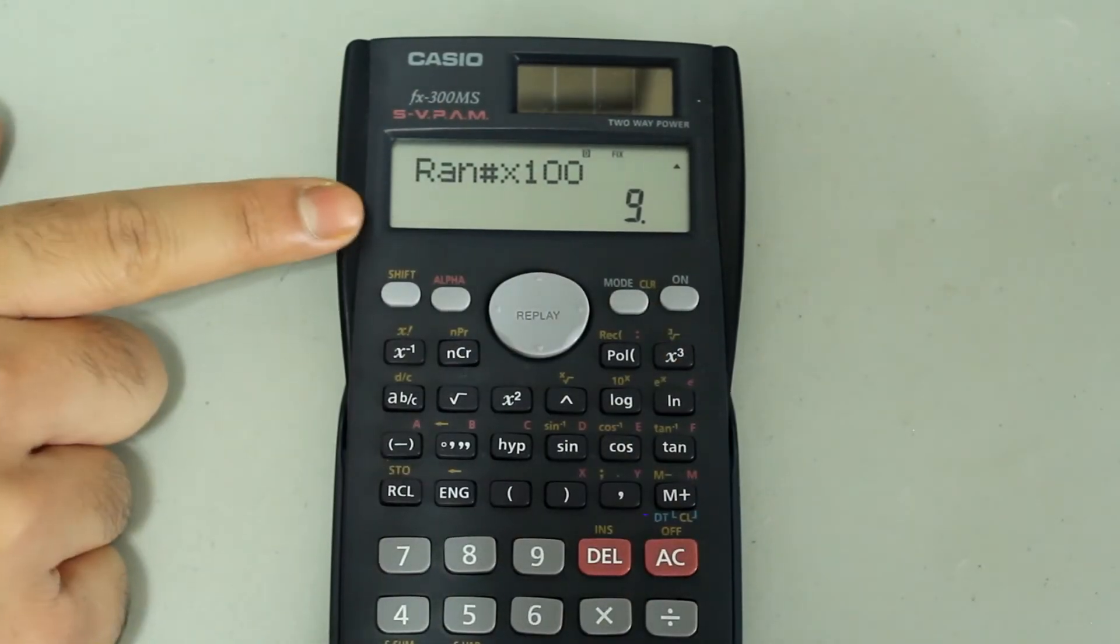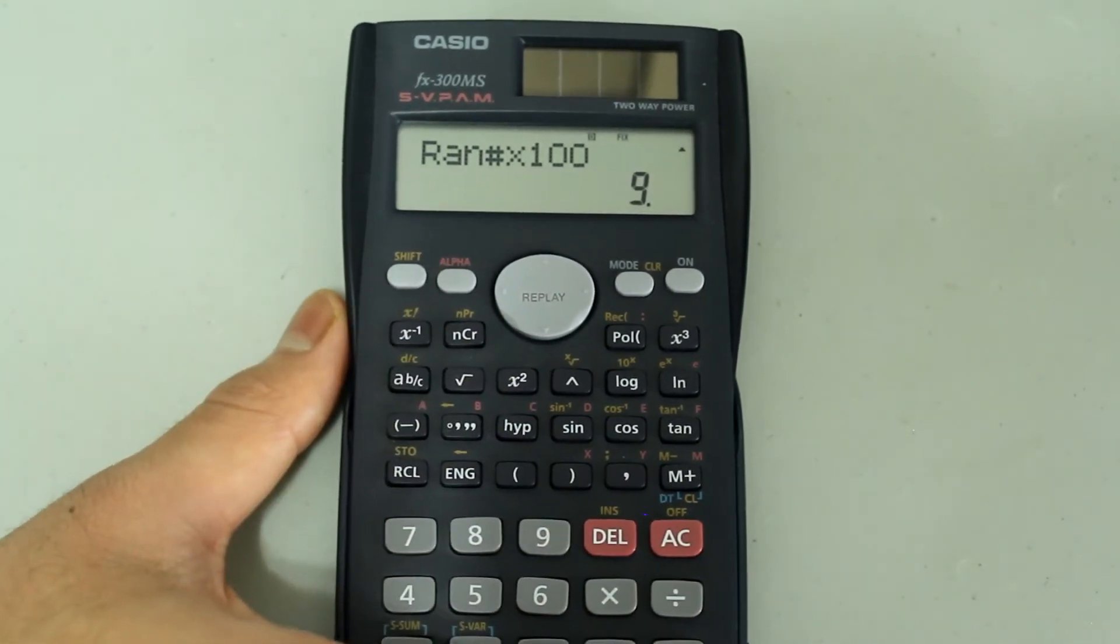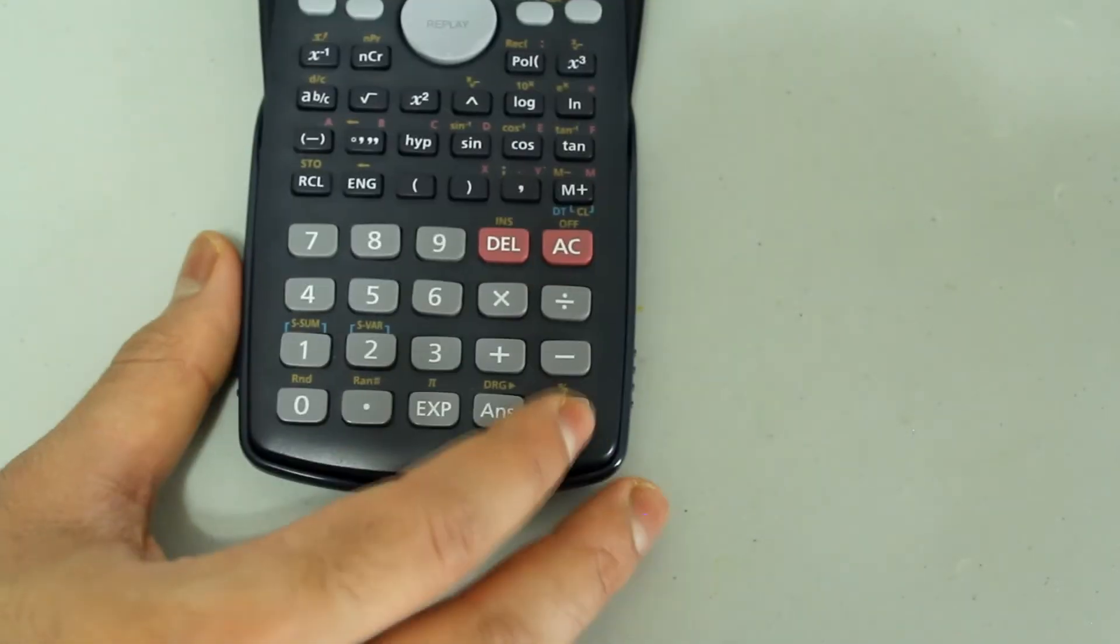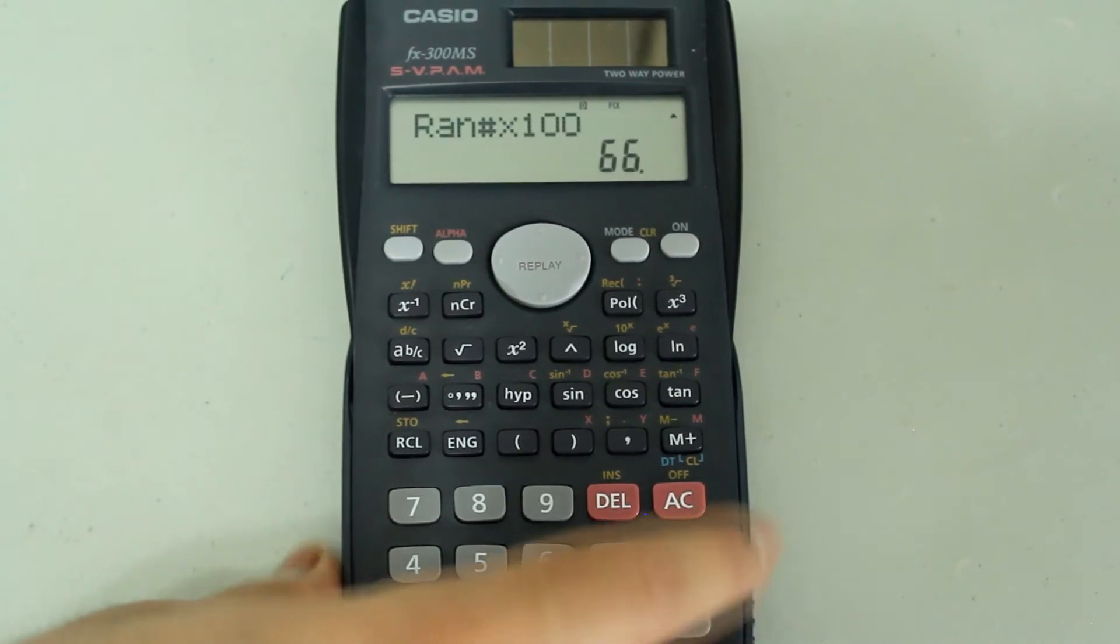Now all your generated numbers will be rounded to the nearest whole number. Continue to press the equal sign and you'll notice that more numbers are generated between 0 and 100.